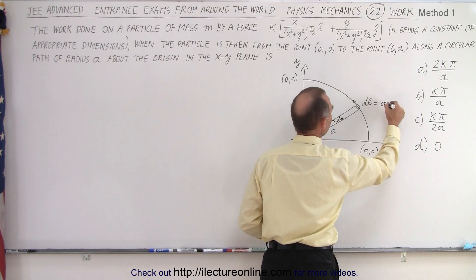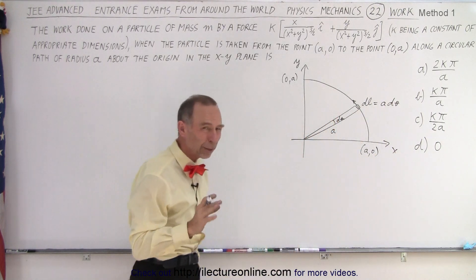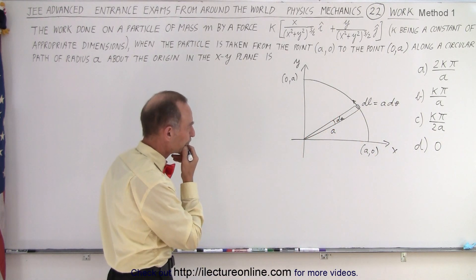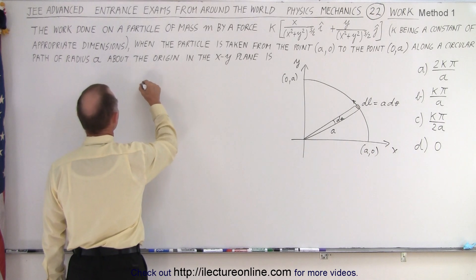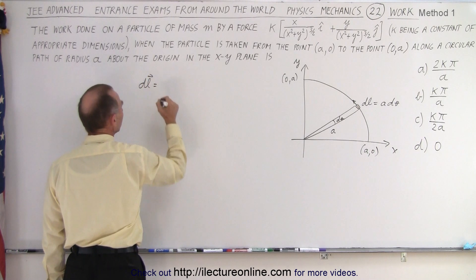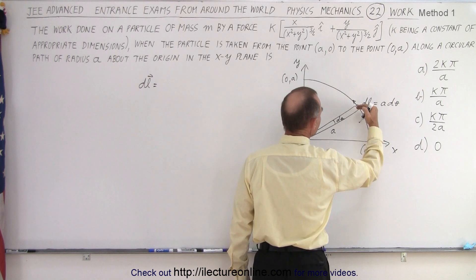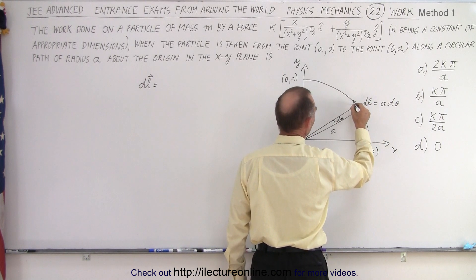then DL is equal to A d theta. Now, that's the magnitude. What about the direction? Well, we can say that DL as a vector quantity is equal to,